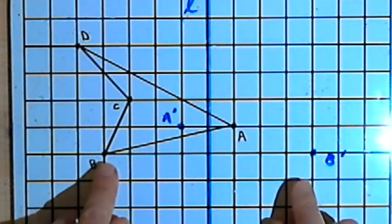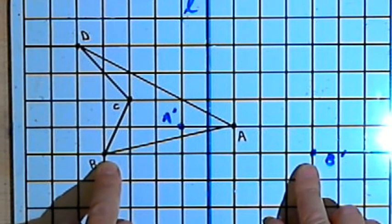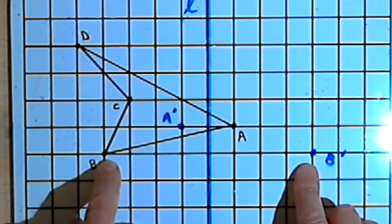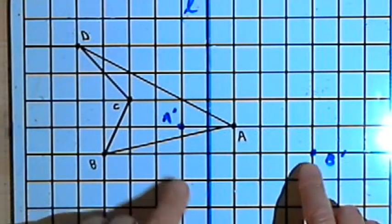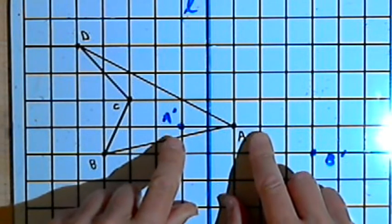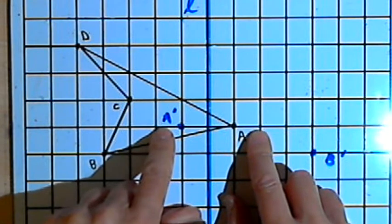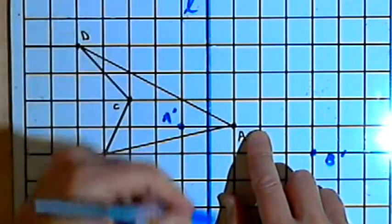Notice, by the way, that if I connected a line between B and B prime, that line would be perpendicular to line L. The same thing would happen if I connected point A and A prime. I'd have a line perpendicular to line L.